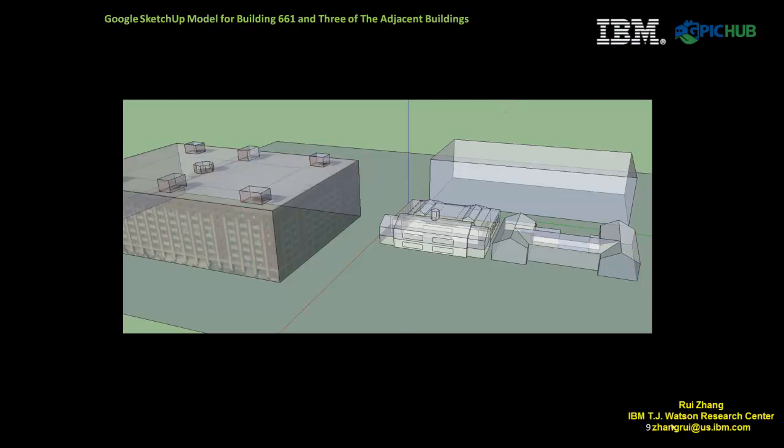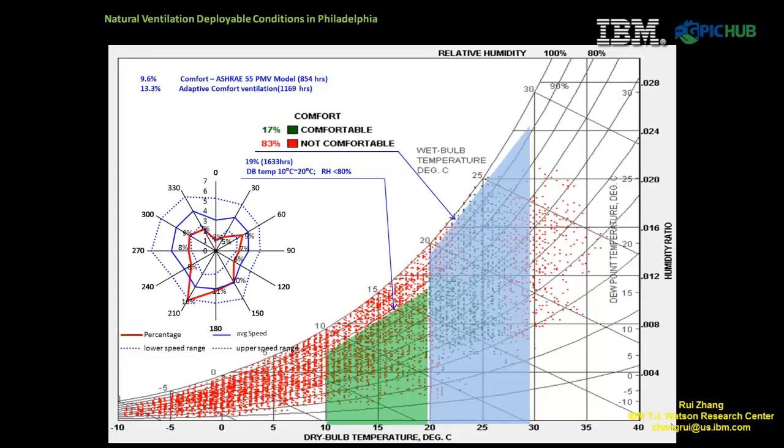The adaptive mesh generation algorithm takes Google SketchUp model as input. The Google SketchUp model of Building 661 and its neighboring buildings was used to generate mesh for the study of natural ventilation conditions, as shown in the figure. The weather condition of Philadelphia is first studied. It is found that at least 17% of the time, the weather condition is appropriate for natural ventilation. Those weather conditions are set as boundary conditions for the CFD simulations.